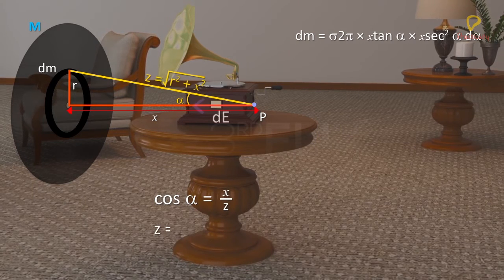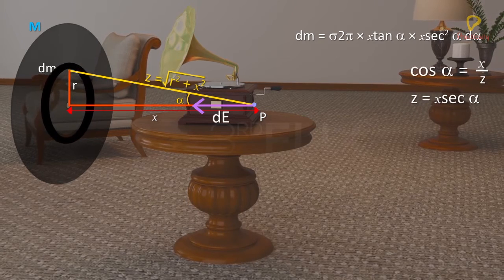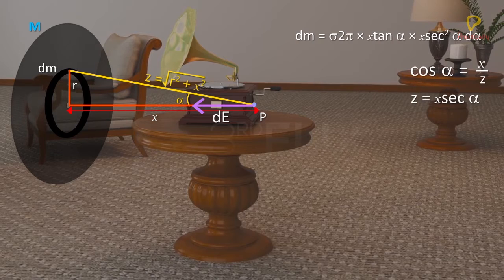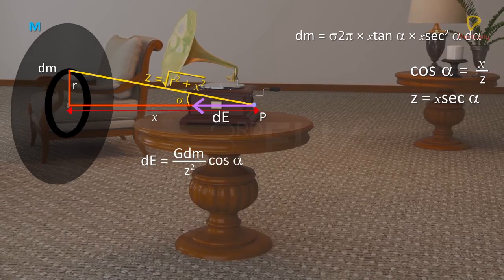Therefore, Z equals X sec alpha. The magnitude of gravitational field at point P due to this ring element is G dm by Z squared cos alpha, directed towards the center.